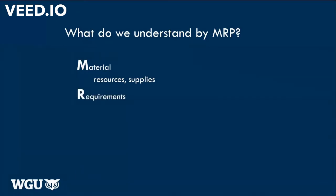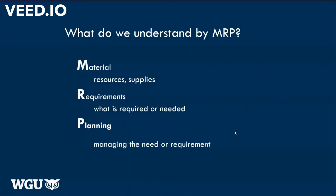R is for requirements. What do we think of when we think of requirements? What is required, or what is needed? The resources that are needed or required. Require can be substituted with the word need. So think of it this way: materials or resources that are needed. And then plans are made to manage that requirement or that need. So MRP refers to the company's resources or supplies that are needed at any given time, and based on that need, plans are made to facilitate that.